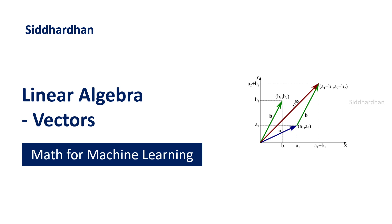Linear algebra is all about dealing with linear equations, and the building blocks for linear algebra are vectors and matrices. In this video I will explain what is meant by vectors, the different approaches we can take to understand vectors, and where we use them in machine learning. The three approaches are: physics-based, mathematics-based, and computer science-based.